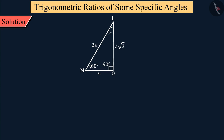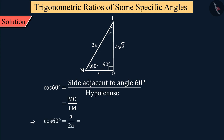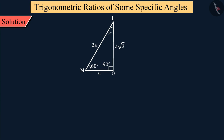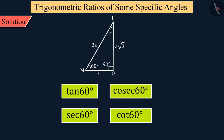If we talk about the value of cos 60 degrees, this will be equal to the ratio of the adjacent side of angle M and the hypotenuse. On solving this, we obtain the value of cos 60 degrees as 1 upon 2. Similarly, we obtain the values of trigonometric ratios tan, cosec, sec, and cot 60 degrees.